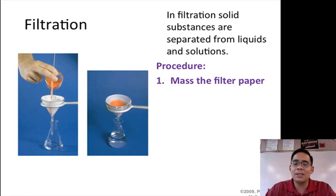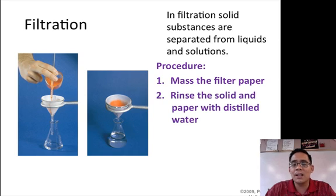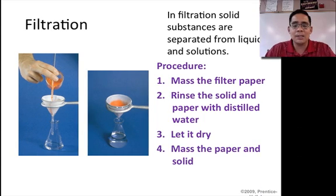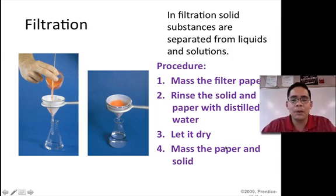So here's the procedure. You mass the filter first. You rinse the solid in the paper with distilled water. You let it dry. And then you can mass the paper and the solid. And by using conservation of matter, you can then actually figure out what is the mass of the solid because you subtract the two papers from each other.